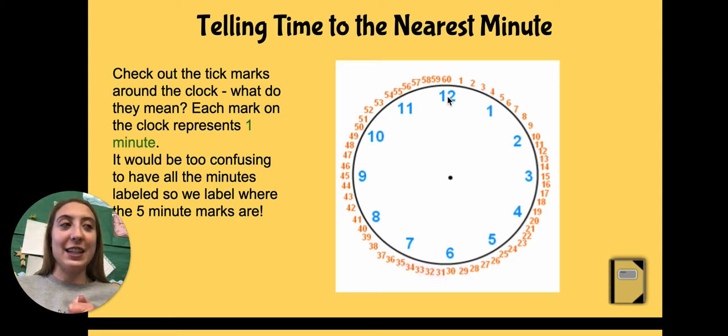So we're not going to say 1, 0, 0. Remember, we say 1 o'clock. All right, so let's keep going. It would be too confusing to have all the minutes labeled on the clock because that would be a lot of minutes and numbers written down.